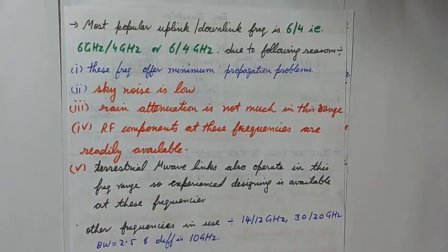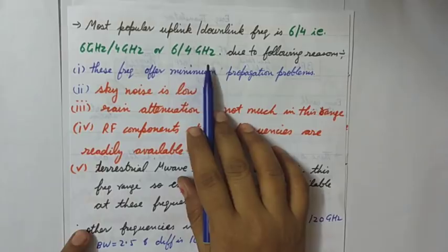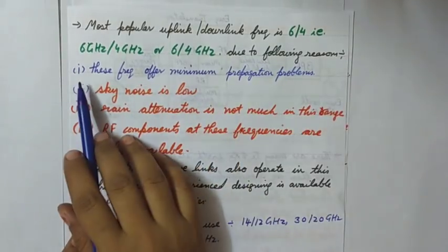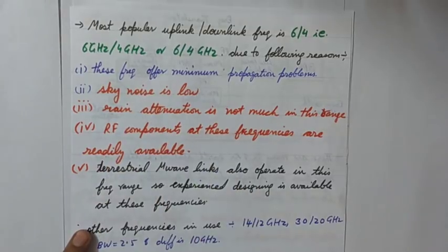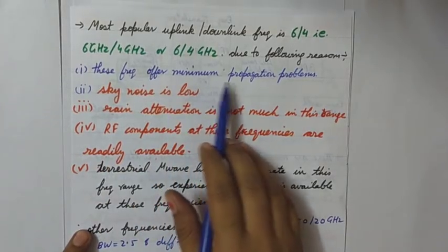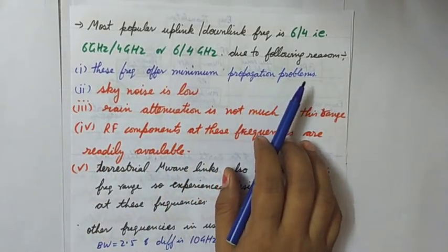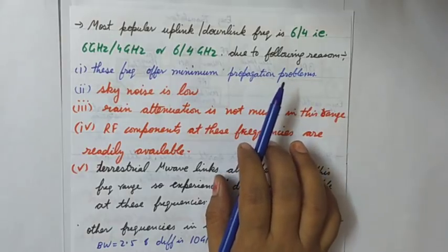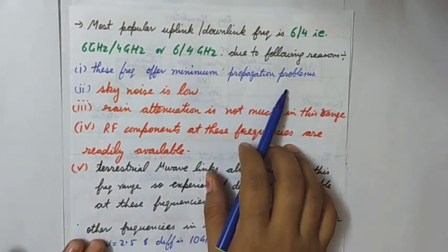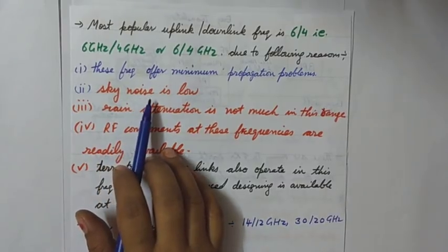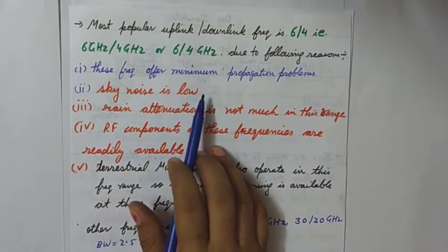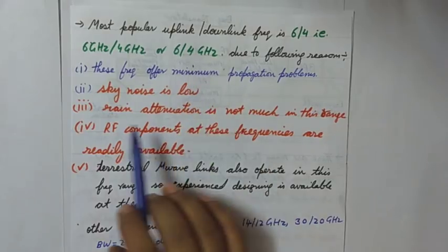And the main reasons for using 6 by 4 gigahertz frequency range for uplink and downlink are that first point is that at these frequencies they offer minimum propagation problems. The signals can pass or propagate easily at these frequencies. The second is that the noise present in the sky is low in this frequency range 6 by 4.